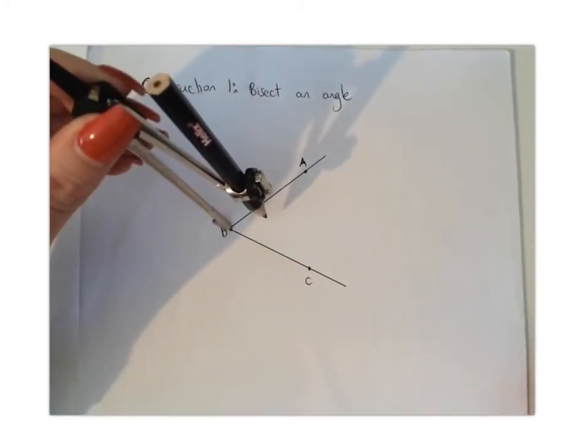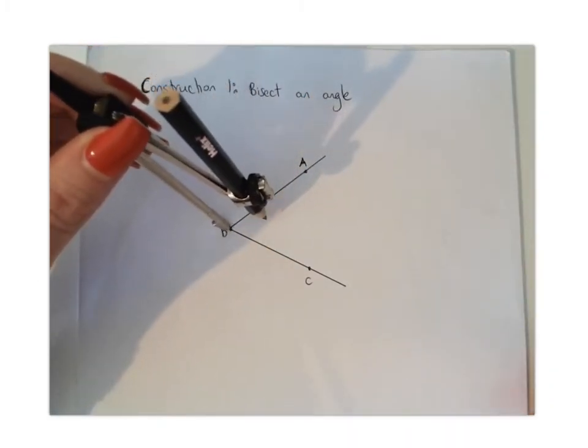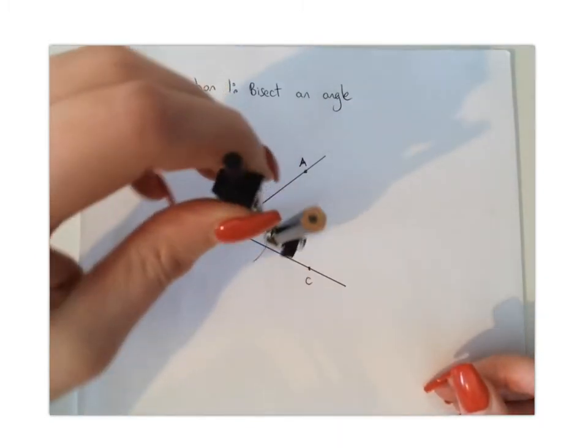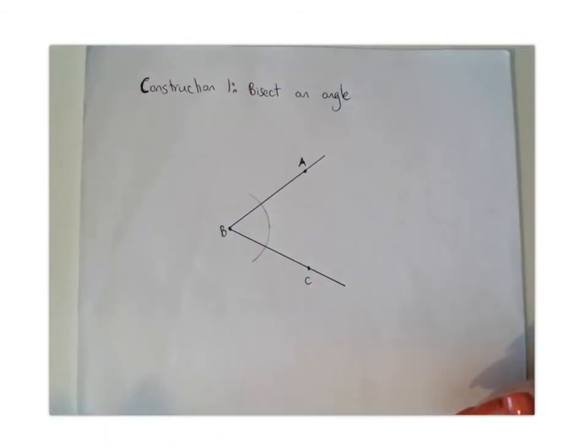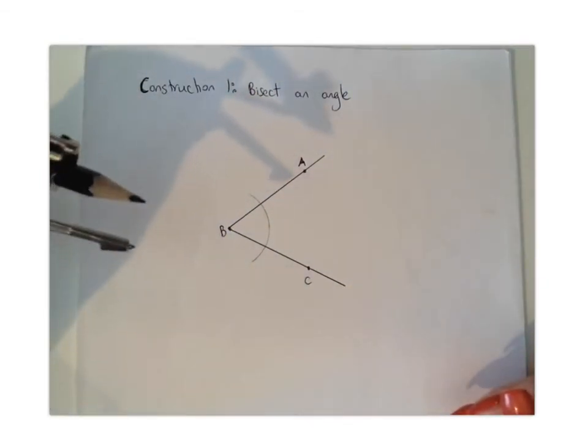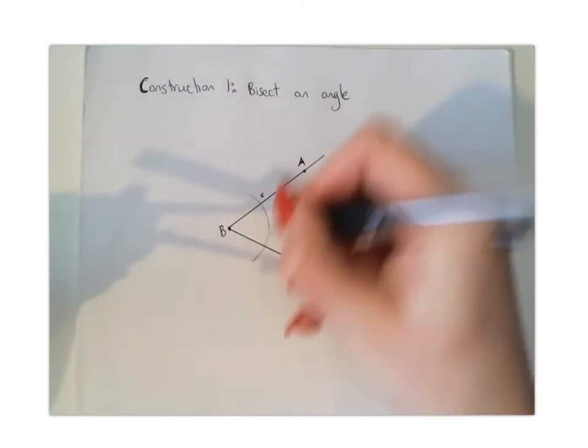We're going to place the metal part down at B and draw an arc that cuts our angle on both of its arms like so. You're going to keep the compass at the same width, and we can just label this X and Y.